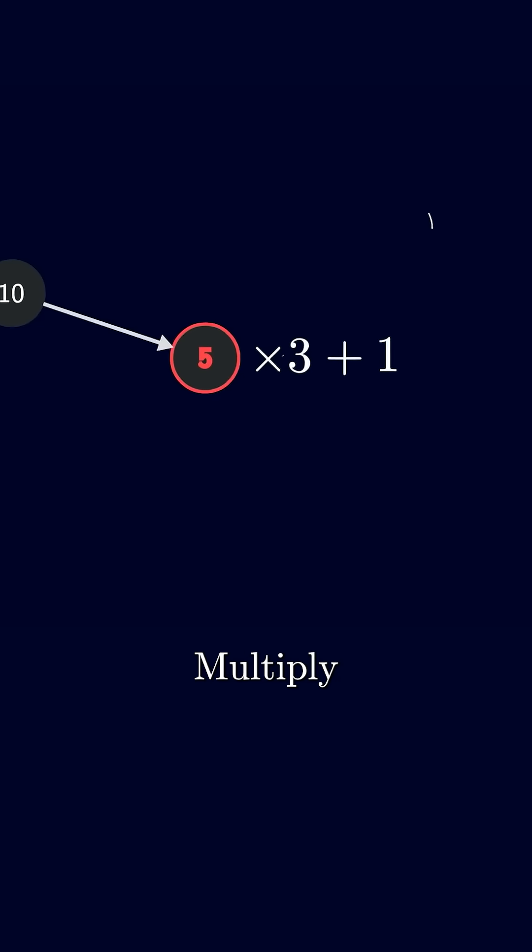Five is odd. Multiply by three, that's 15, add one, 16, divide by two, that's eight.